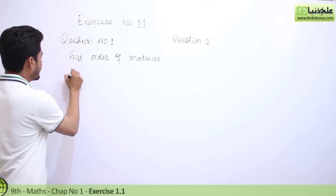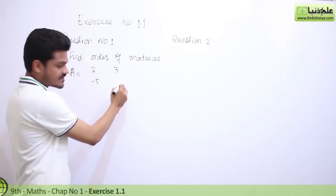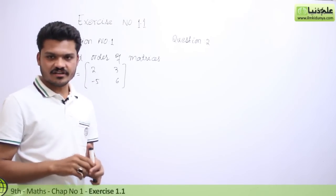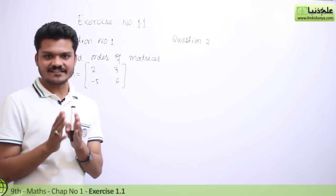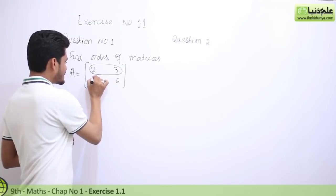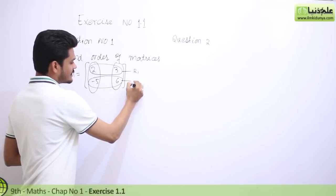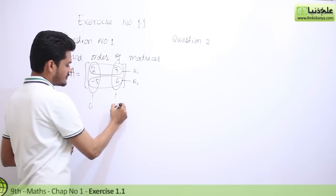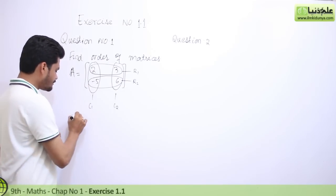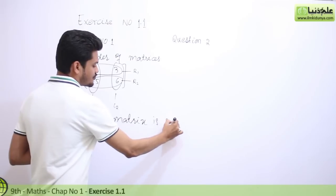For question number 1, part A, the matrix has entries 2, 3, minus 5, 6. The order means the number of rows by the number of columns in a matrix. If you see this matrix: first row, second row, first column, second column — this matrix has two rows and two columns. So the order of matrix A is 2 by 2.